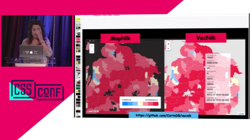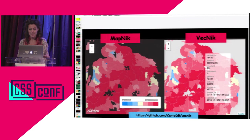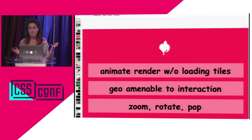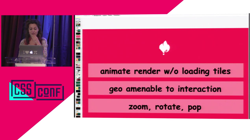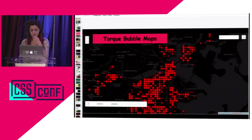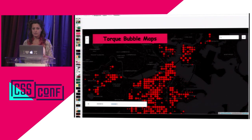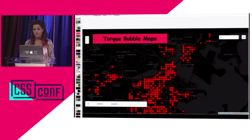VecNik is our JavaScript library based on HTML5 and Modest Maps that lets you do vector data styling on the fly. There's a lot of interactivity you can achieve with vector versus raster maps. You can animate and render without loading tiles — it's all done on the client. The geometries are amenable to interaction because they're all in the browser, so you can do hovers and all kinds of interactivity. Zoom, rotate, and pop — all qualities of vector are baked in. It's an open source JavaScript library. We're also trying to think of different ways people can use Torque beyond simple bubble maps, and you can leverage clustering effectively with CartoCSS.